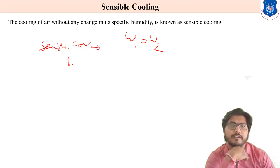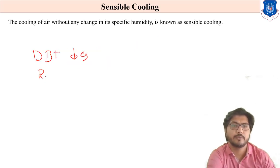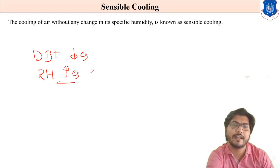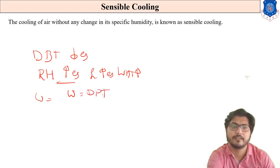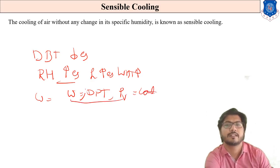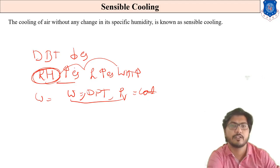Parameters affected by sensible cooling: dry bulb temperature decreases. Relative humidity increases. Since relative humidity increases — and using the psychrometric chart — enthalpy decreases, wet bulb temperature decreases. Omega (W, specific humidity) is constant, so dew point temperature is constant and partial pressure of vapor is constant. So these three terms remain constant.